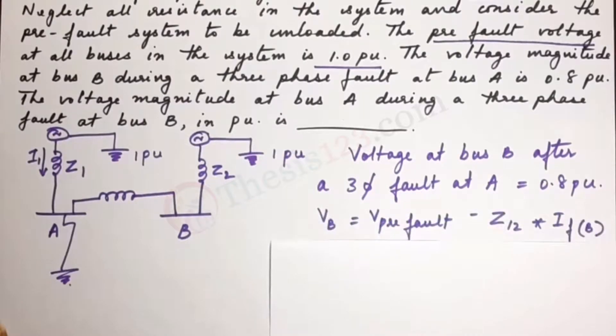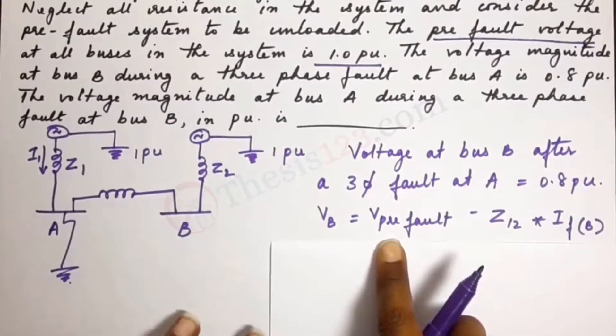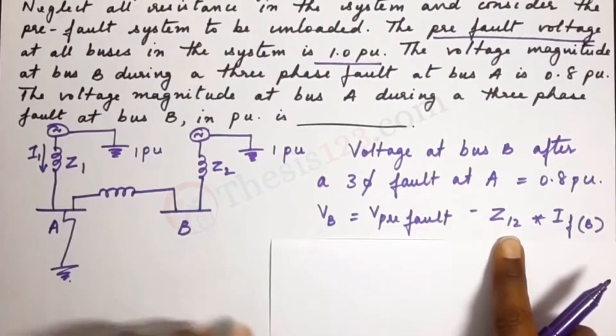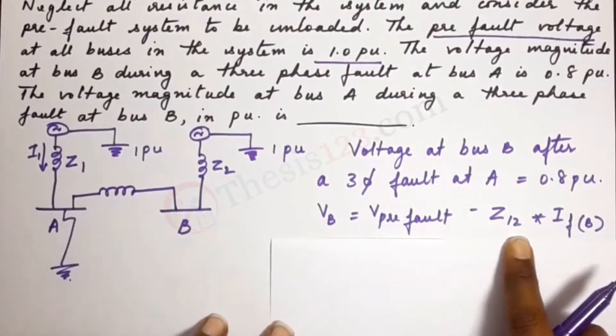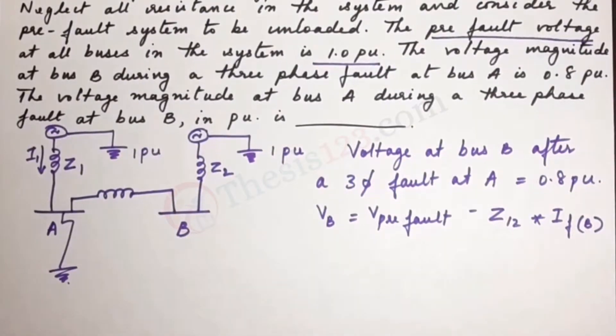Now the general formula is VB equals V pre-fault voltage minus Z12 times the fault current at B. That's what we have so far.